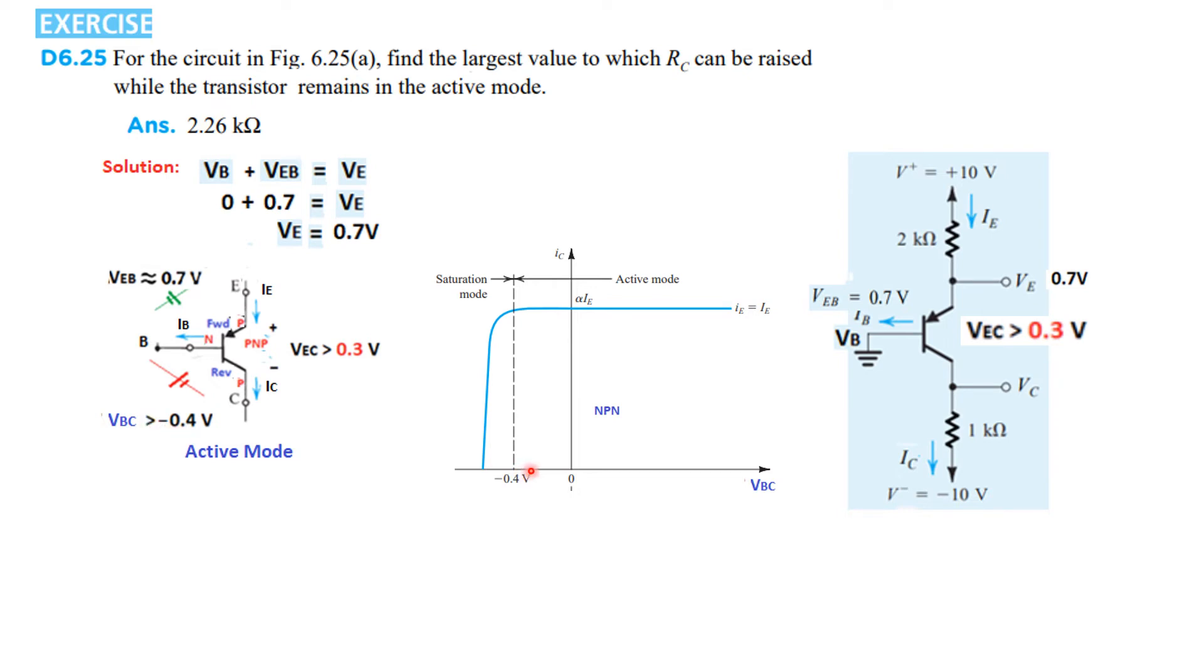That means, it can be minus 0.3, minus 0.2, 0, plus 1, 2, 3, etc. So, this is the minimum value. And, if this is the minimum value, then VEC will be 0.3 or greater. How do we calculate? We can calculate from here. This voltage minus VBC. Then, minus VEB and plus VEC. Putting in the value, minus 0.4, minus 0.7. So, VEC is 0.3. And, we are saying that this is the lowest value of VEC. It has to be greater than 0.3.